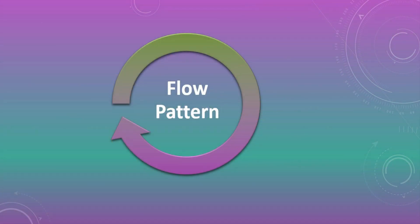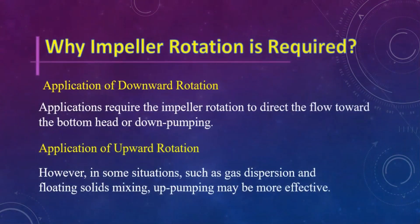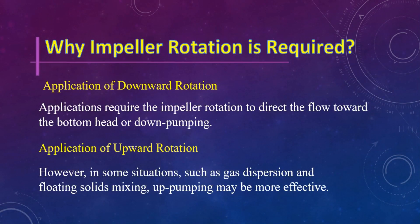The next segment is the flow pattern produced by the pitched blade turbine. Before discussing the pattern produced by the pitched turbine, we should know why impeller rotation is required. Impeller rotation is required to direct the flow toward the bottom head, or down pumping. However, in some situations such as gas dispersion and floating solid mixing, up pumping may be more effective.